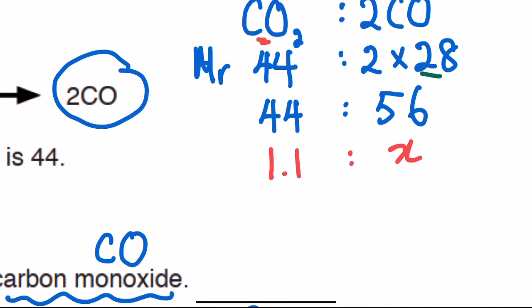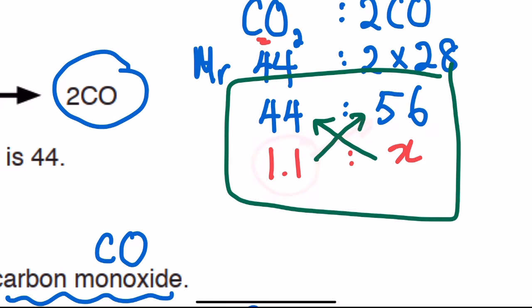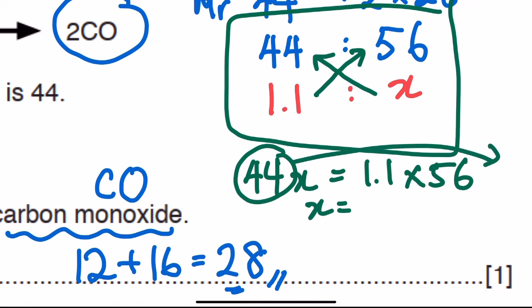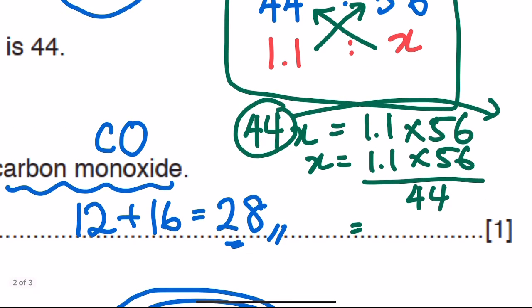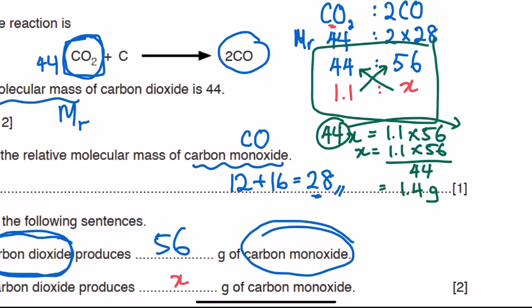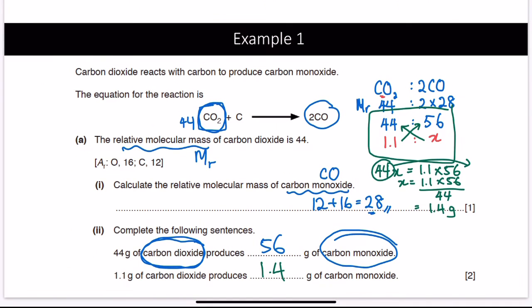Use cross multiplication: draw a cross, giving 44 times x equals 1.1 times 56. So 44x equals 61.6, meaning x equals 61.6 divided by 44. Working out the calculation gives x equals 1.4 grams. Therefore, 1.1 grams of carbon dioxide will produce 1.4 grams of carbon monoxide.